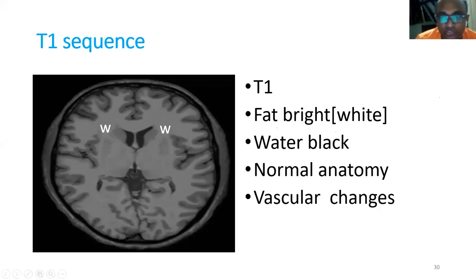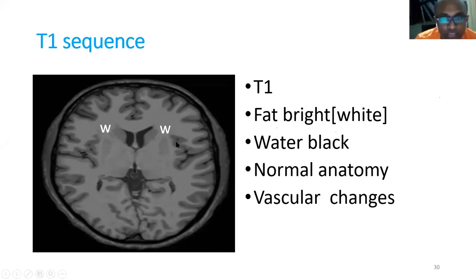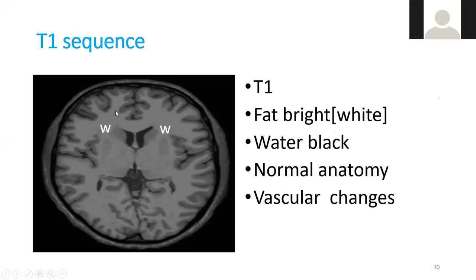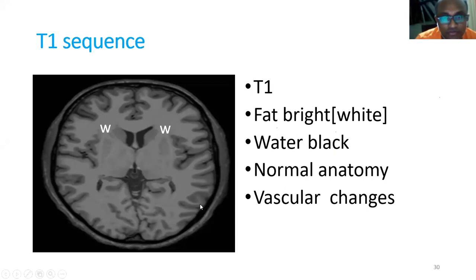T1 sequence is the normal sequence. Fat is bright here. There are two things: white matter and gray matter. CSF looks black in T1. White matter is inside the brain and gray matter is outside. White matter looks white and gray matter looks darker. This is how you identify the T1 sequence.